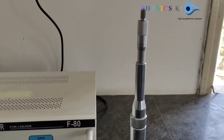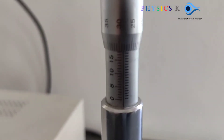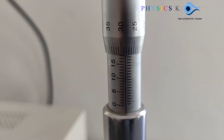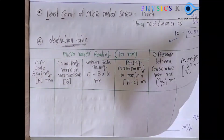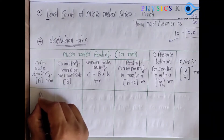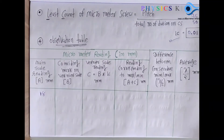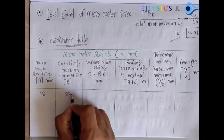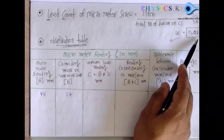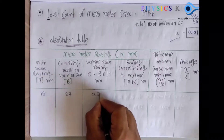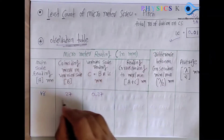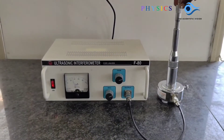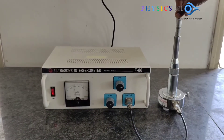Check the value on the micrometer screw gauge: the main scale reads 18 and the circular scale coinciding mark is 27. Write down your value — main scale reading is 18 mm. Multiply the coinciding number by LC: 27 × 0.01 = 0.27 mm. Add: 18 + 0.27 = 18.27 mm. Now turn again in the same direction for the next deflection.